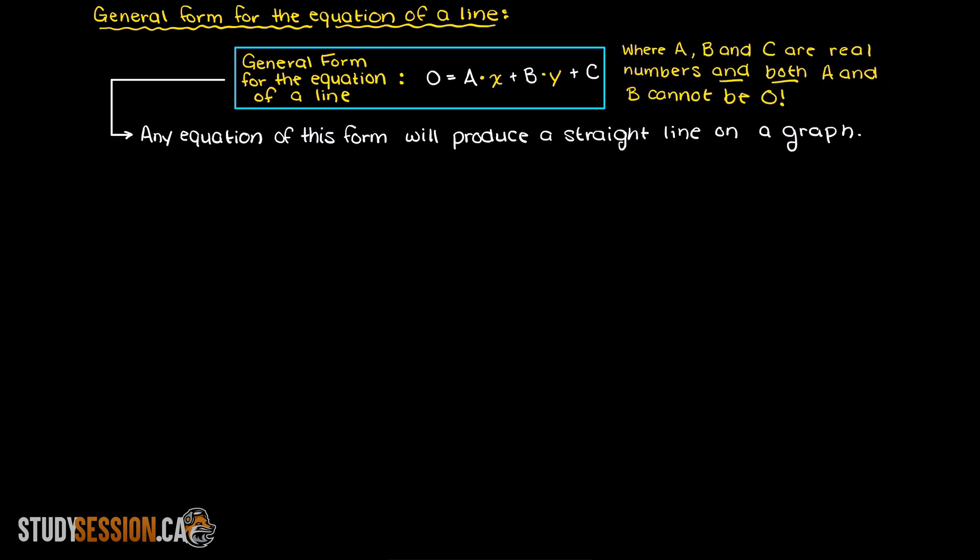One or the other can be, just not both, as this would leave us with just C equals zero, which means we have nothing and definitely not a straight line.